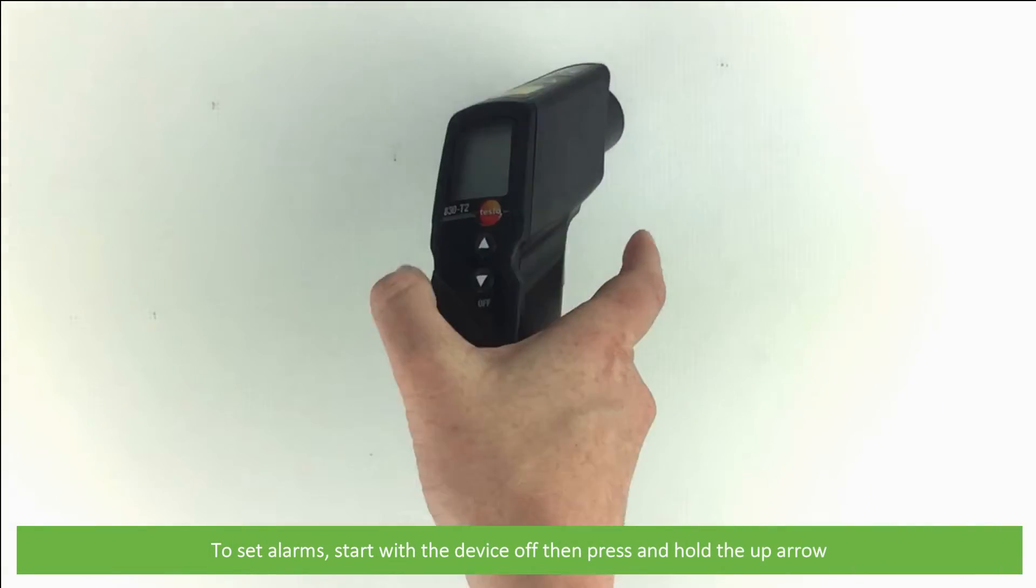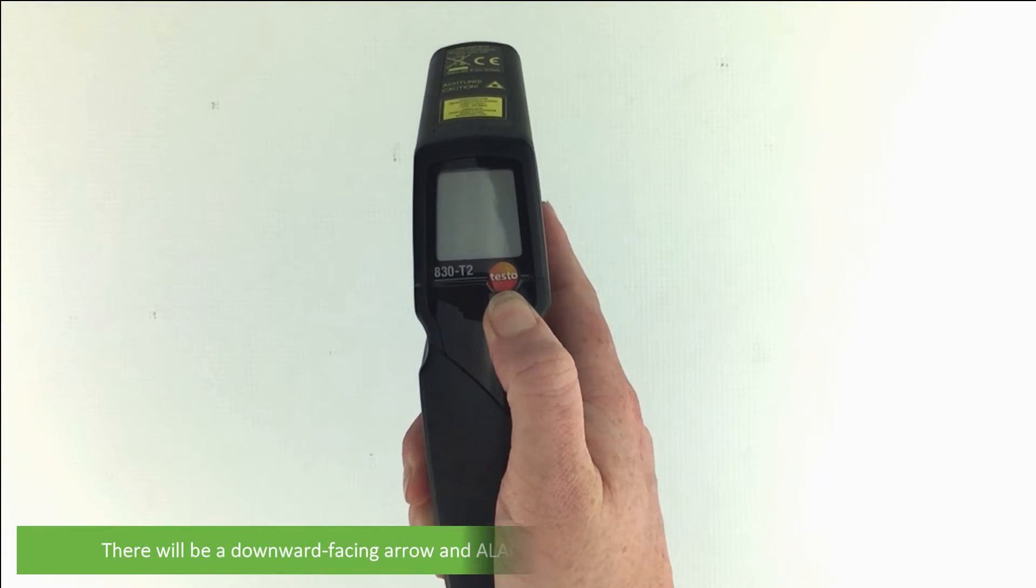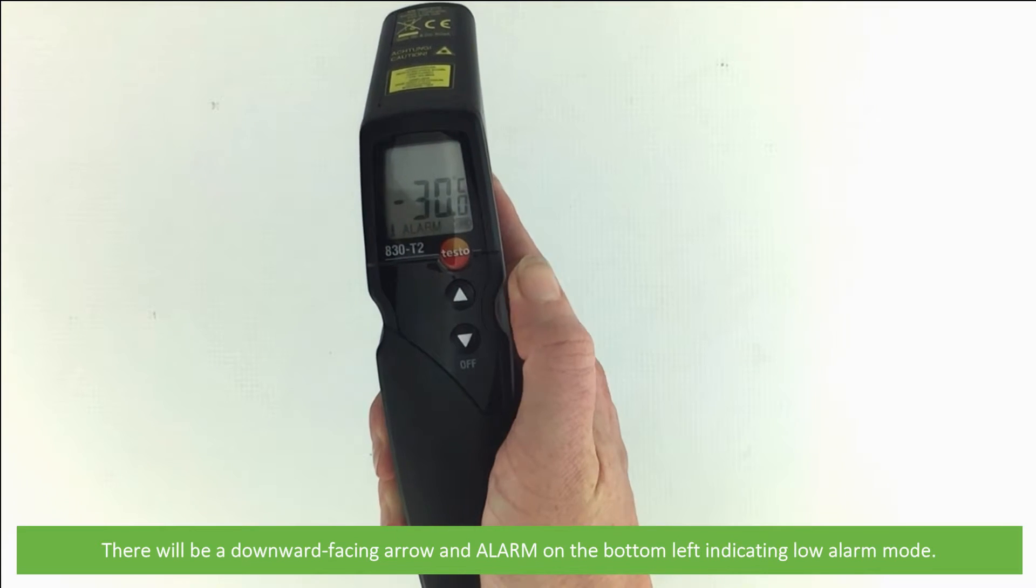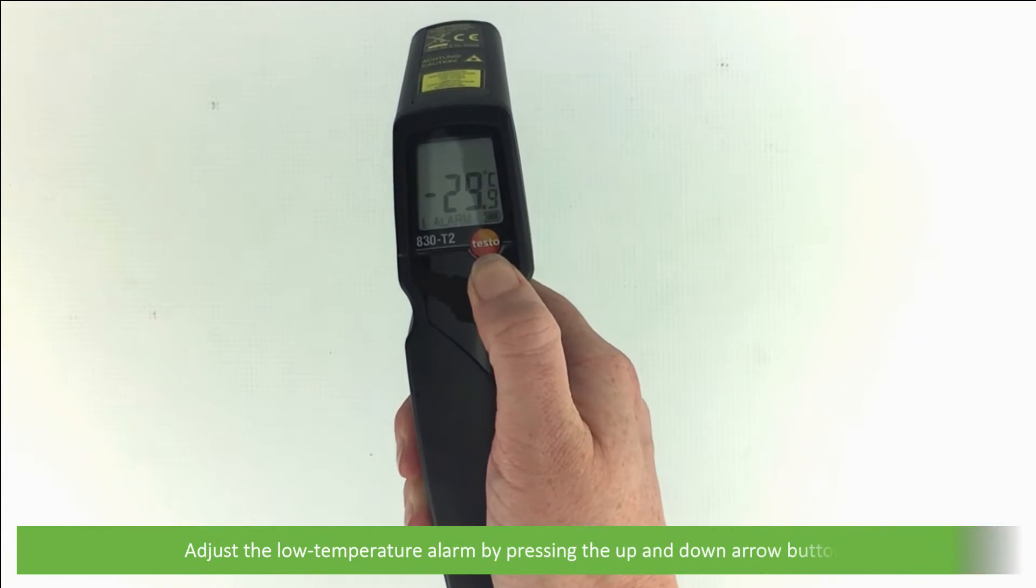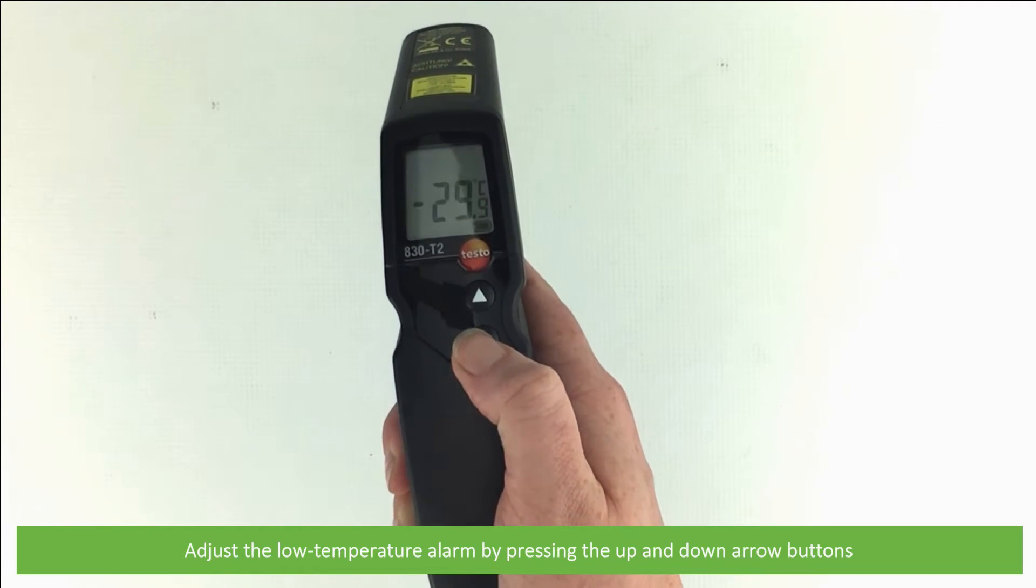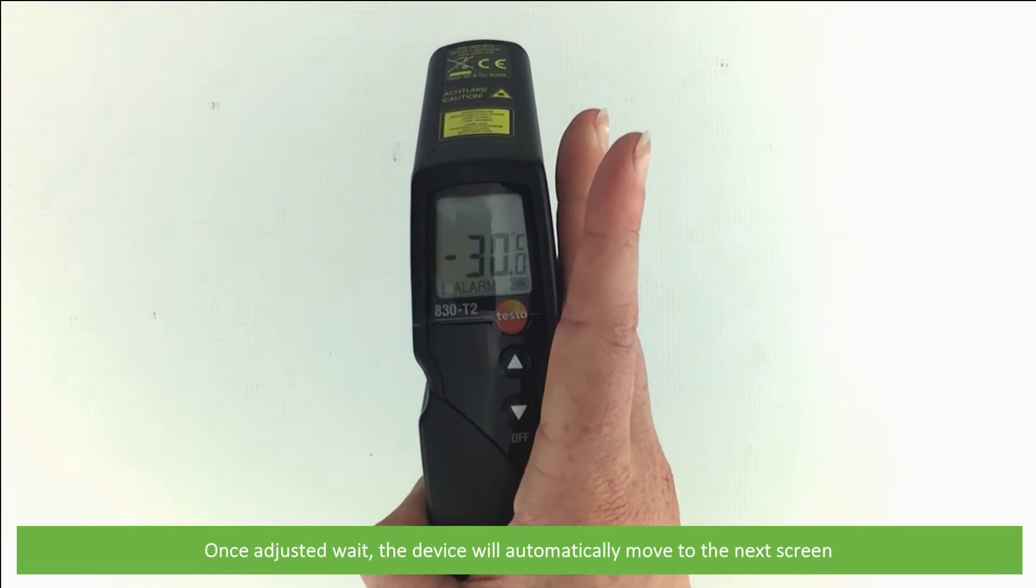To set alarms start with the device off then press and hold the up arrow. There will be a downward facing arrow and alarm on the bottom left of the screen indicating low alarm mode. Adjust the low temperature alarm by pressing the up and down arrow buttons. Once adjusted wait. The device will automatically move to the next screen.